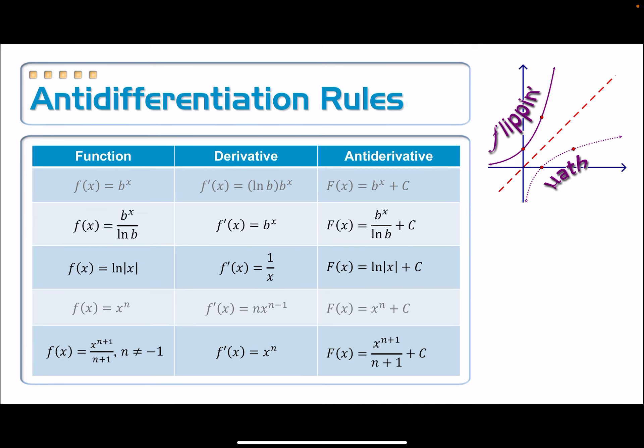And then keep in mind that n cannot be equal to negative 1. If n is equal to negative 1, of course, you get a division by 0. But let's think about this in this particular case right here. If n is equal to negative 1, it becomes this function here whose antiderivative is actually the natural log of the absolute value of x plus c.